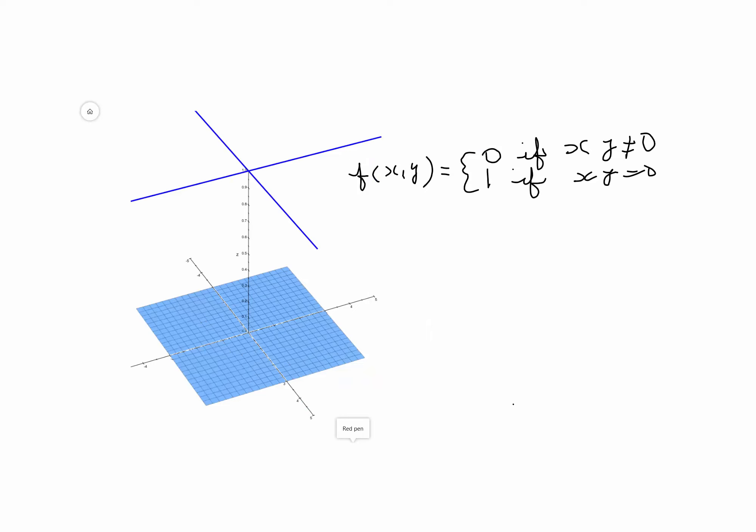Here I wrote the function for you: it is 0 if (x, y) is not equal to (0, 0), and that is at all these places where x or y is not on the axis. Otherwise, the value of the function is 1.